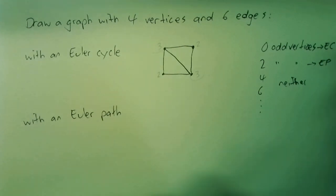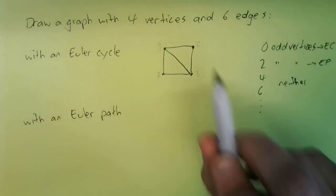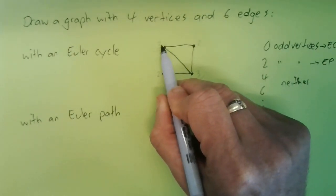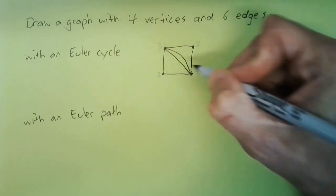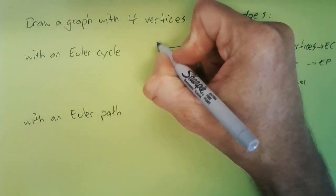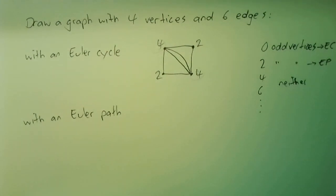So if I'm trying to make an Euler cycle, I want no odd vertices. I've got one more line to draw, and I'm trying to make three and three into even numbers. What about drawing that line? Now that's a four, that's a four, and they're still twos. Success! I've drawn a graph with four vertices, six edges, and an Euler cycle.